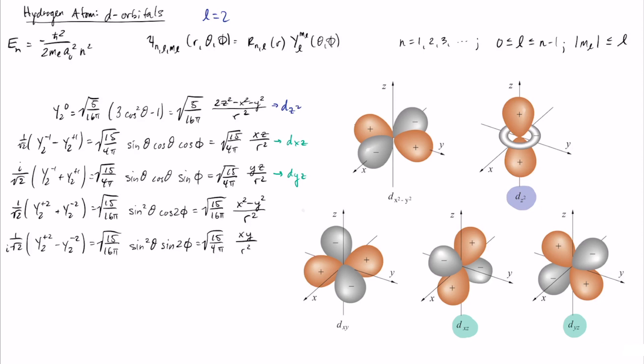And now the last linear combinations I would look at are l equals 2 with plus and minus 2 for m sub l. And in this case when you go through and analyze this what you get for this first one is you get x squared minus y squared over r squared and then xy over r squared. So both of these have an obvious name, so this gets called the dx squared minus y squared, and the corresponding polar plots are shown here.